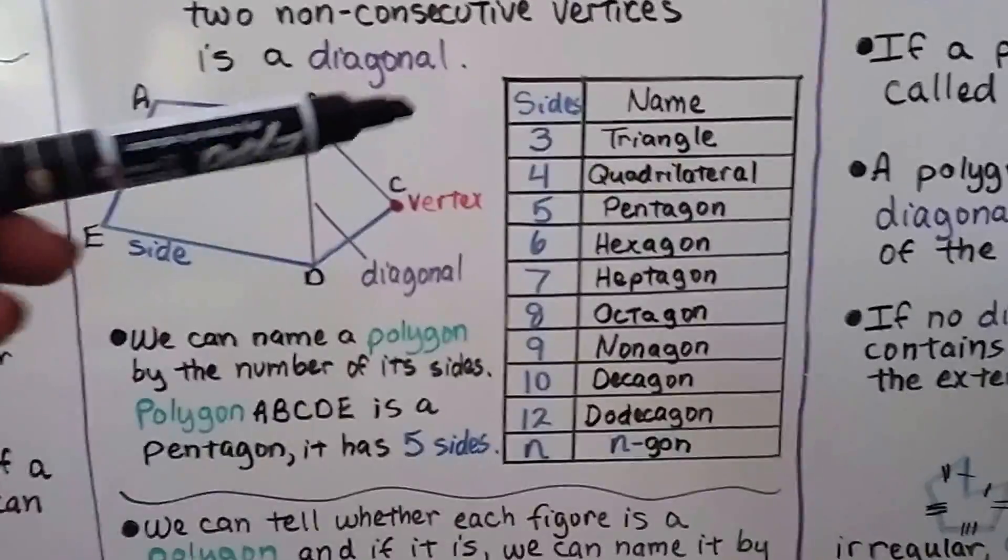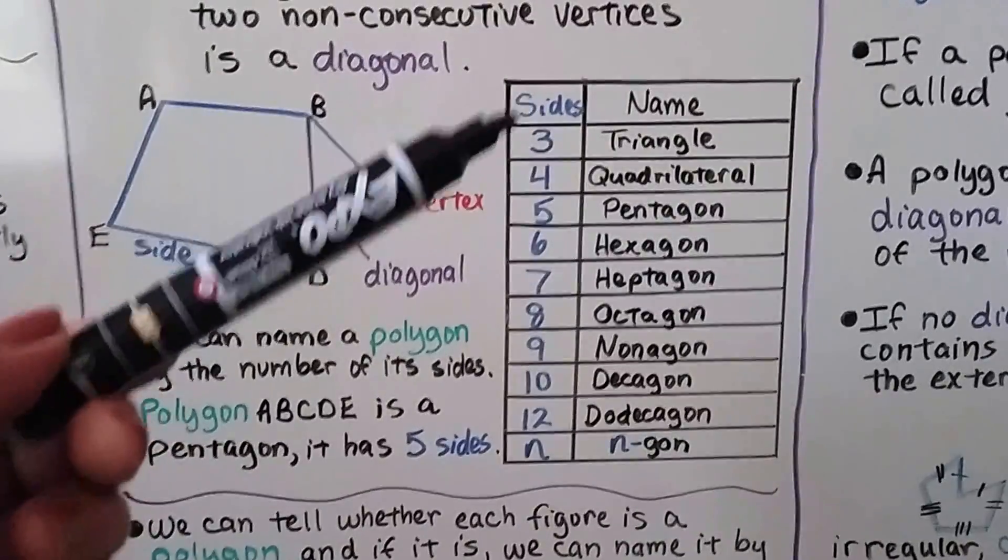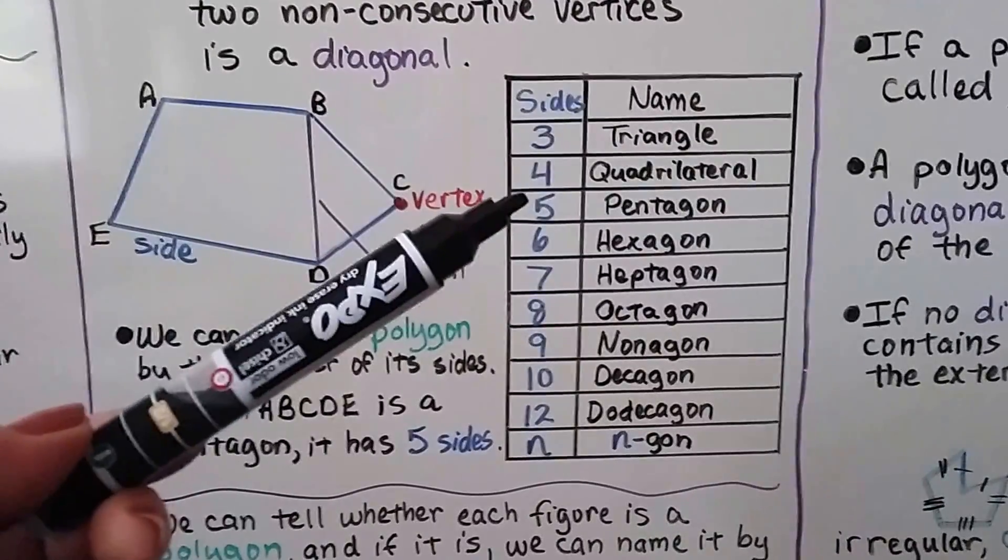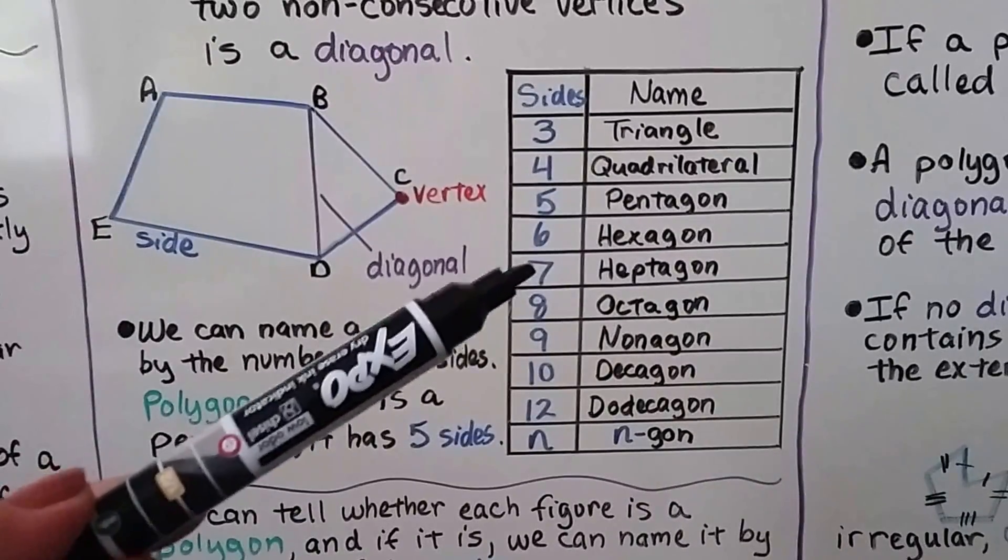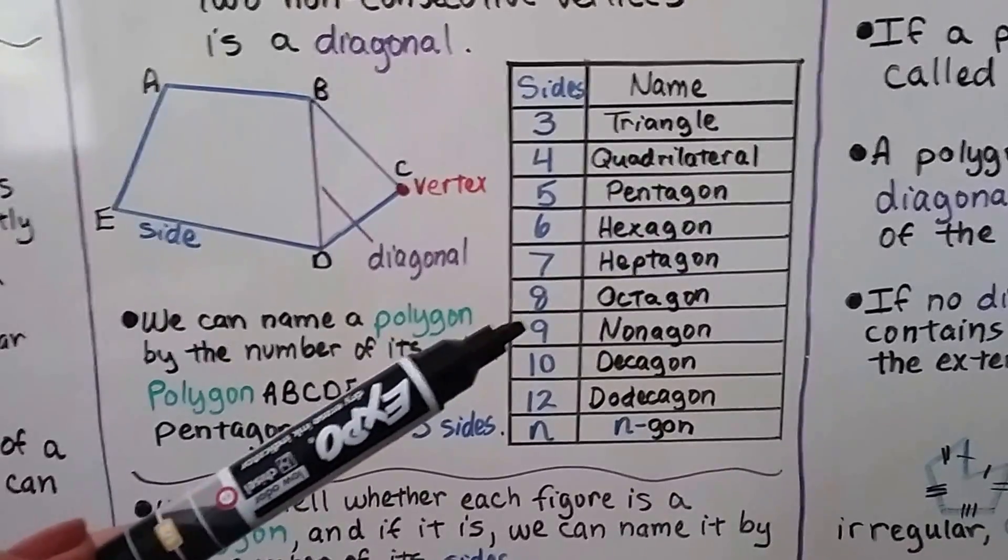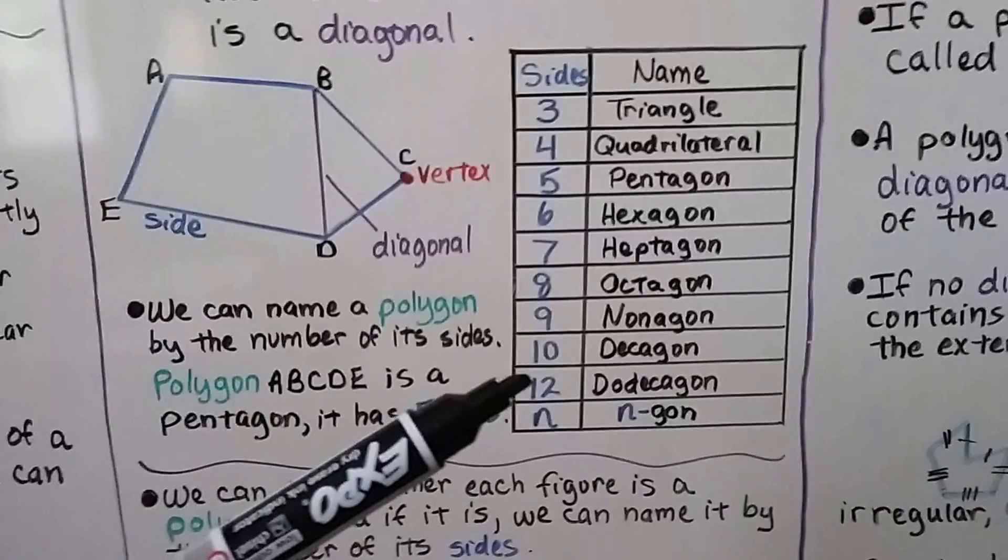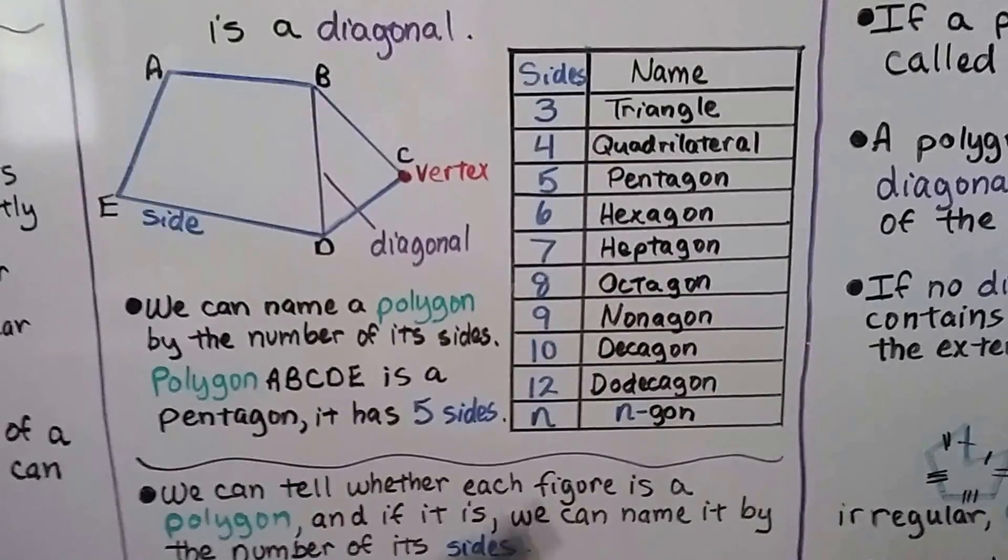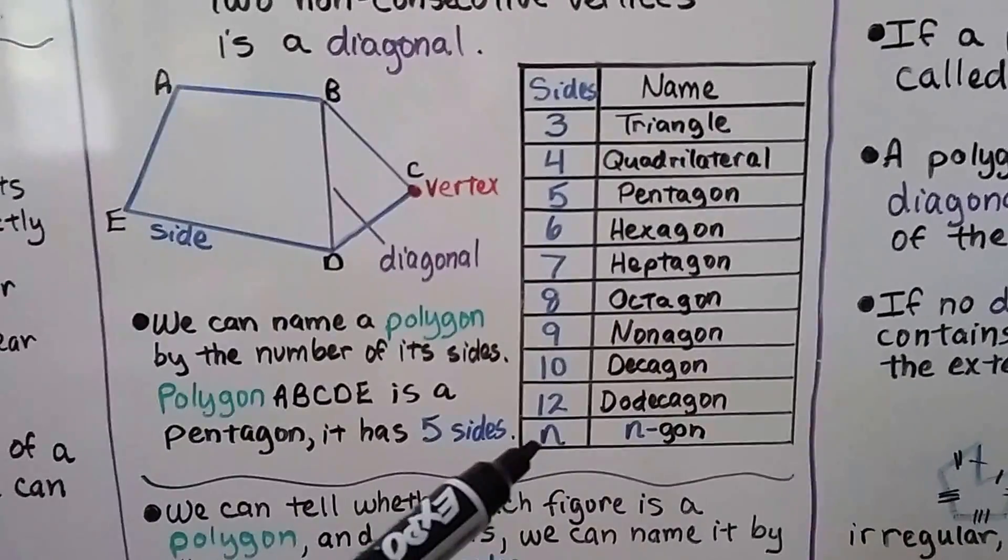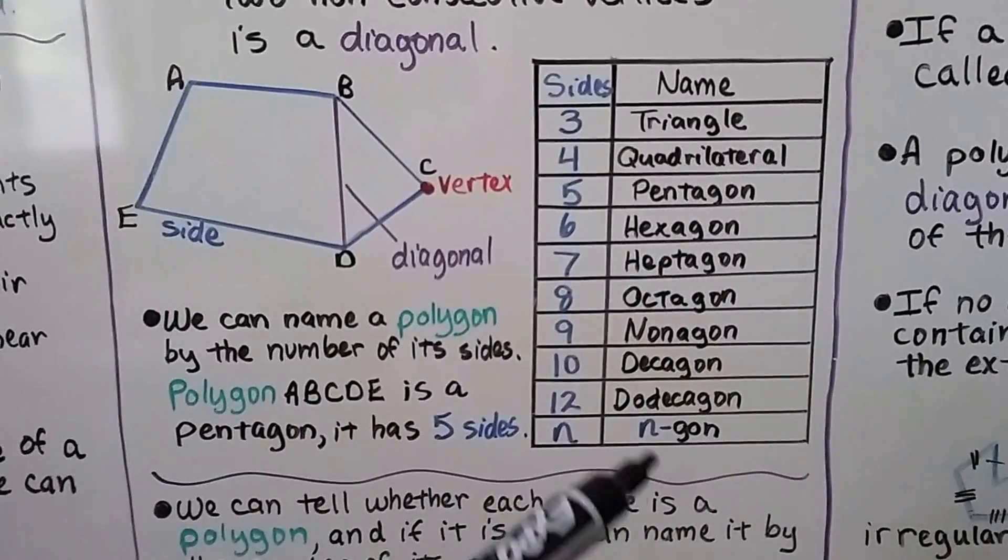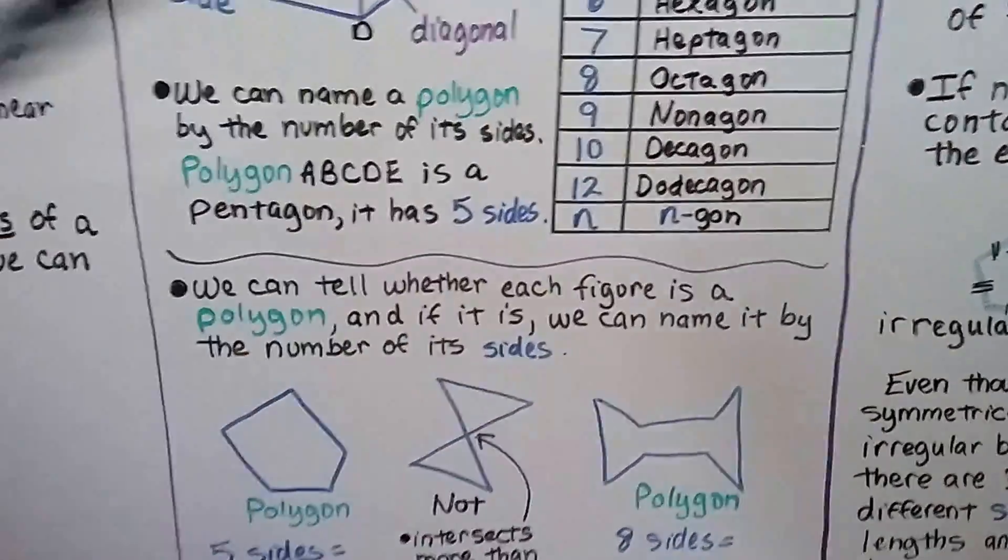The number of sides helps us with the name of the polygon. 3 is a triangle, 4 is a quadrilateral, 5 is a pentagon, 6 is a hexagon, 7 is a heptagon, 8 is an octagon, 9 is a nonagon, 10 is a decagon, 12 is a dodecagon. If it has a large amount of sides or sides we don't know, we can call it an n-gon and just use a variable for however many sides it's got.